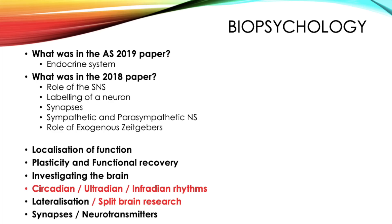Next you've got biopsychology. Within the AS paper this only comes into paper 2 within the approaches section, and the question there was on the endocrine system. In the 2018 A-level paper there was the role of the somatic nervous system, the labelling of a neuron, a question on synapses, a question on sympathetic and parasympathetic nervous systems, and then a question on the role of the exogenous zeitgebers.